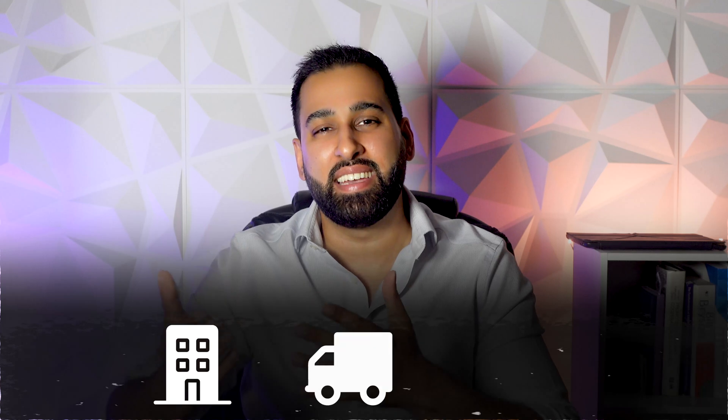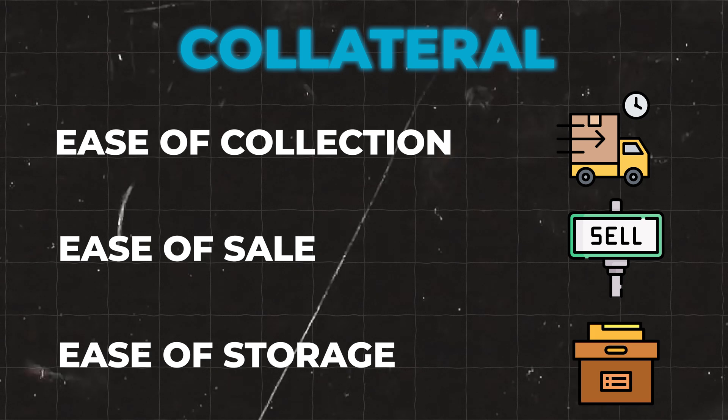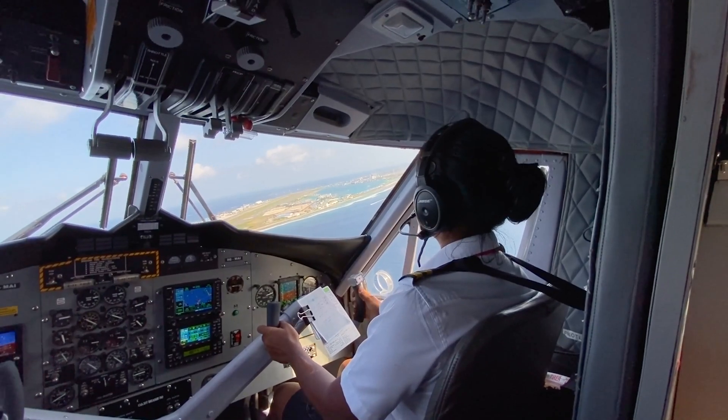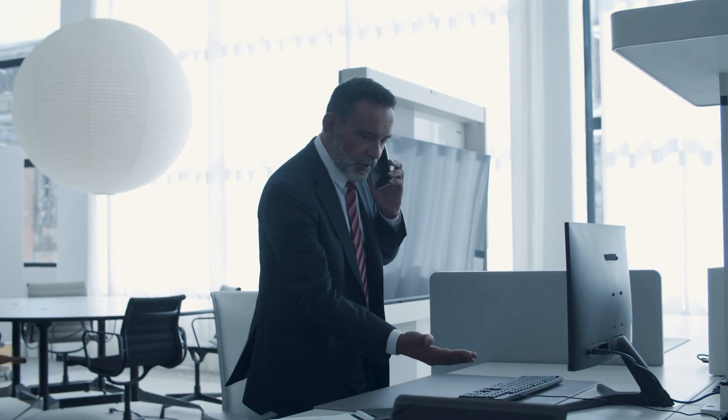Collateral is about what can be used as a guarantee if things go bad. An easy example is a mortgage, where a house is the collateral if the borrower can't make repayments. For a company it's more complicated. When assessing collateral, it's not just about the value of what's being offered — you also have to review how easily it can be collected, how easily it can be sold, and whether there are costs associated with holding it. A good example of bad collateral is an airplane located in another country. On paper it looks valuable, but if you need to collect it, you'll need to hire a pilot, pay for storage, and figure out how to sell an airplane. These are points often missed by candidates when discussing collateral in interviews.